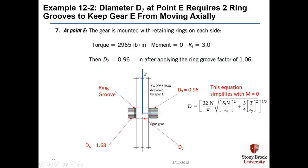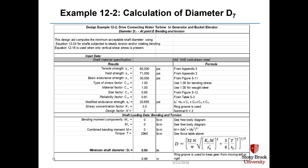Diameter D7 at point E requires two ring grooves to keep gear E from moving axially. At this point the moment is zero — we still have torque and normally we'd apply KT equals 3.0, but because M is zero, KT is not really in the equation for the diameter. So we get a much smaller diameter of D7 equal to 0.96 inches.